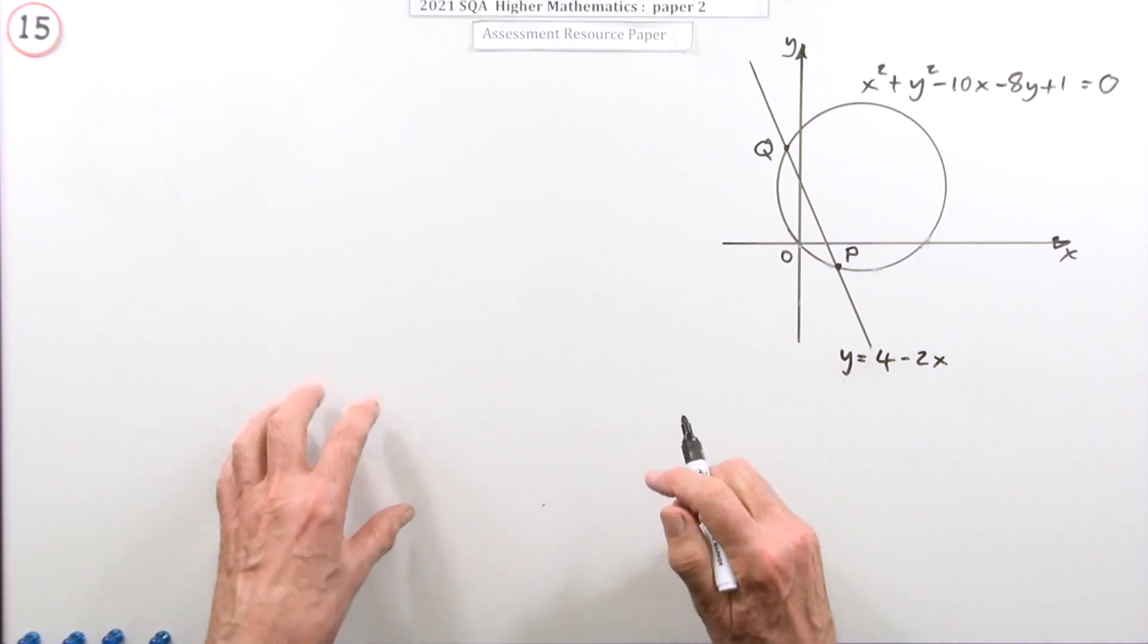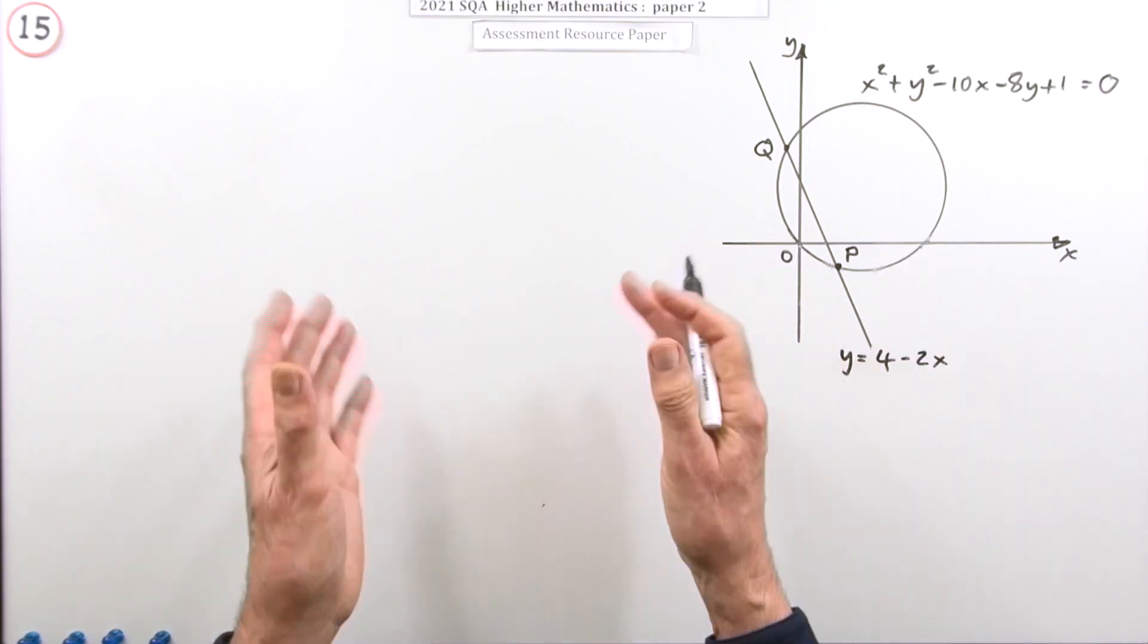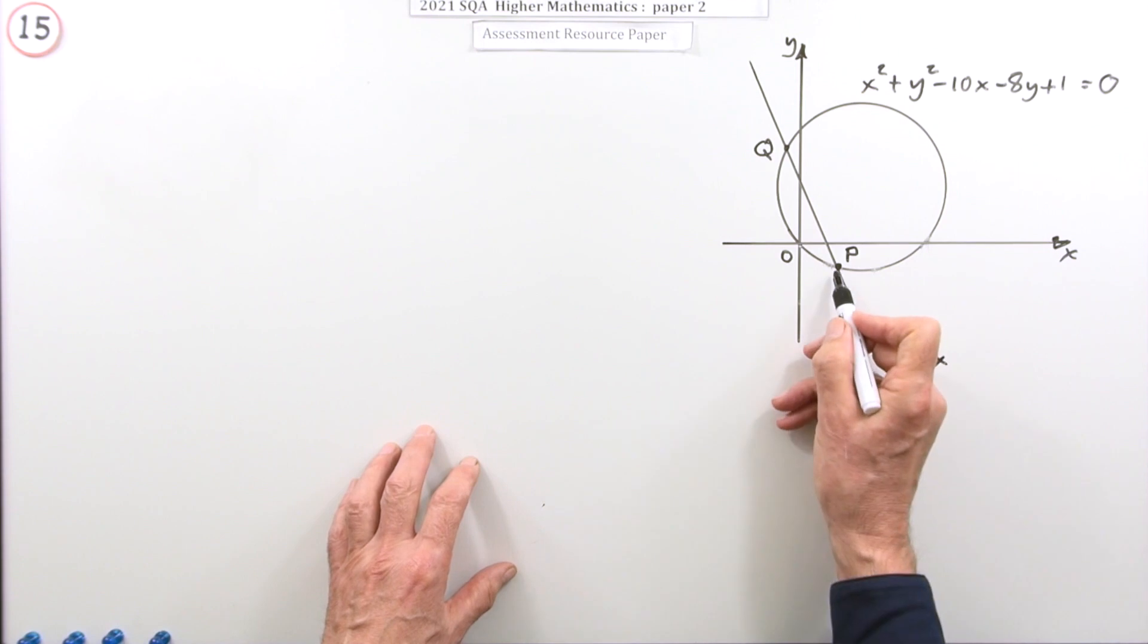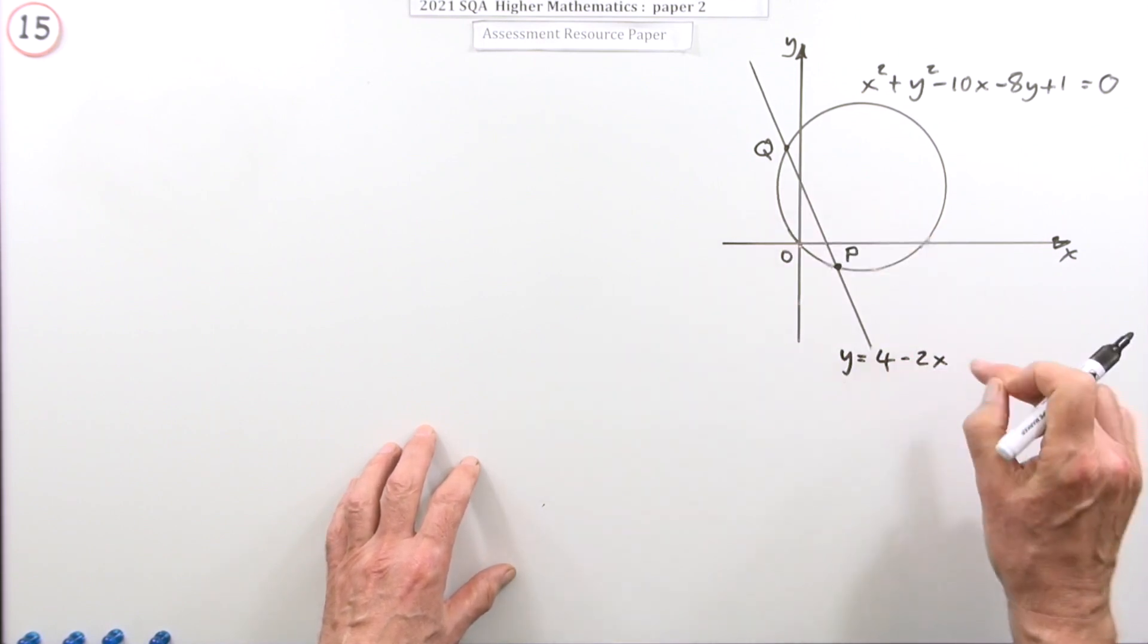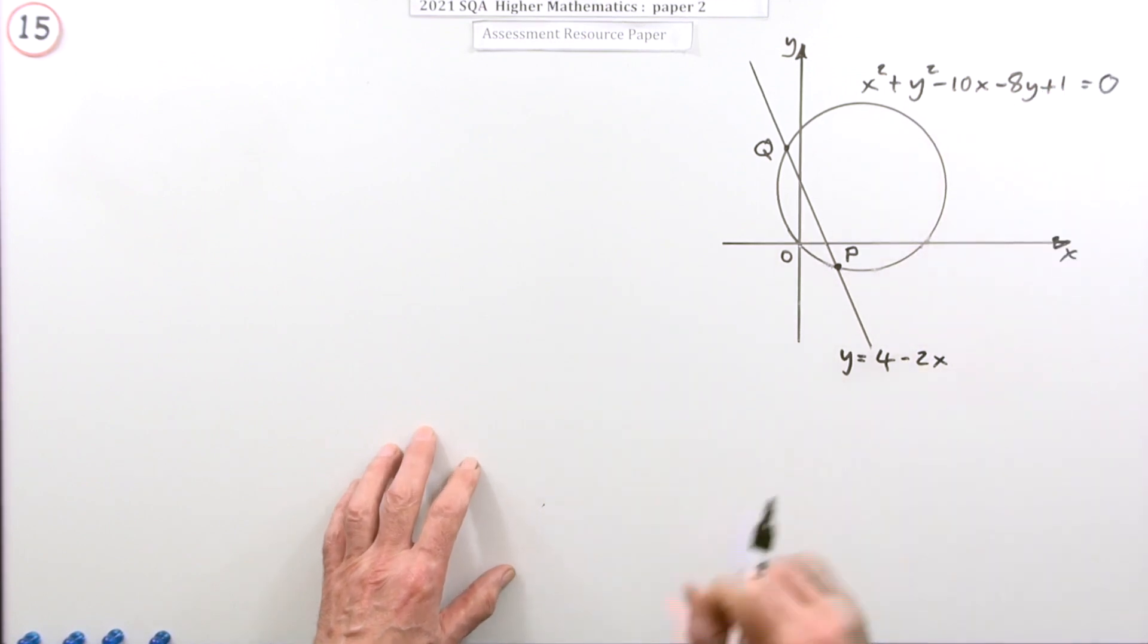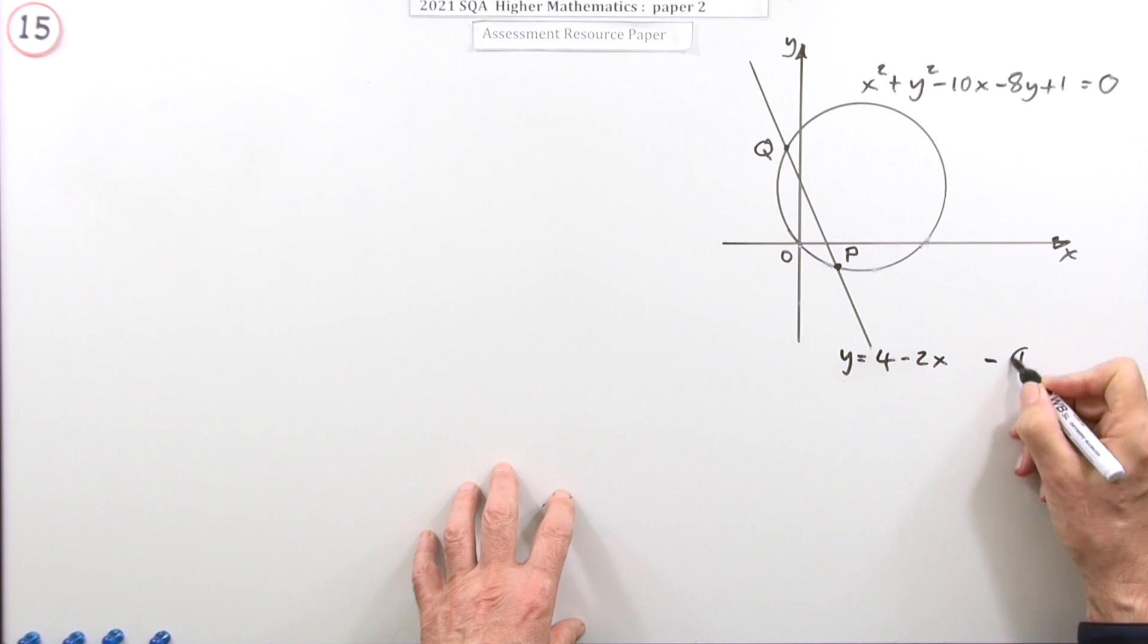So the question was, find the points of intersection. Well, those will be simultaneous equations. At the points of intersection, that's the set of points that satisfy both equations at the same time. Simultaneous equations. So I'll give them names, one and two.